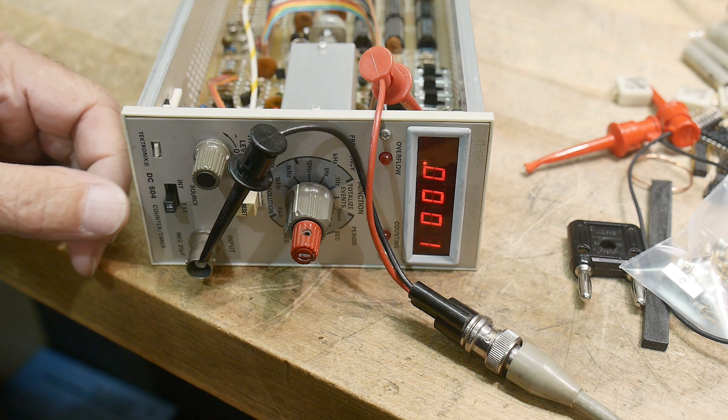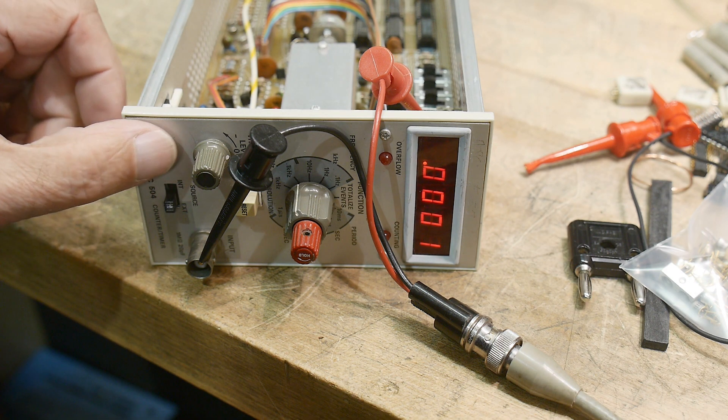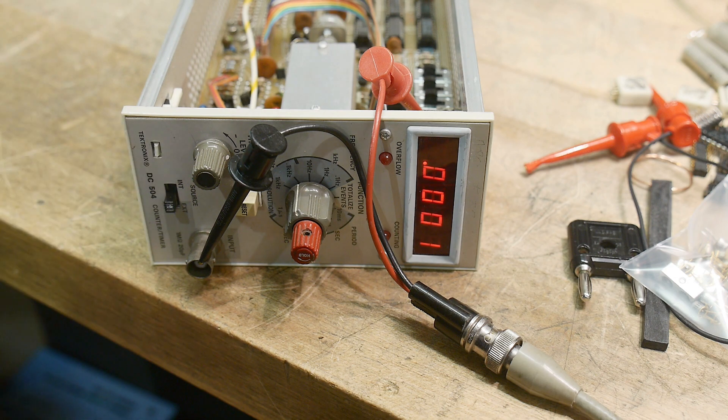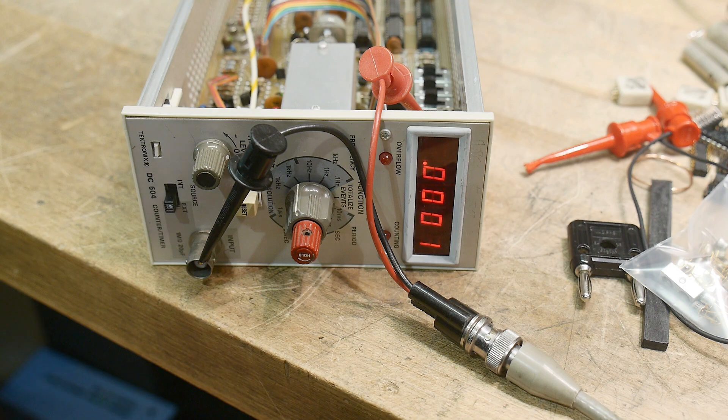All right, what's on the bench? It's a DC 504 counter timer from Tektronix. The little pull tab is broken. Might be able to fix that. So let's see here.